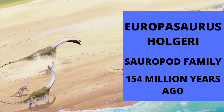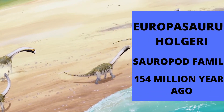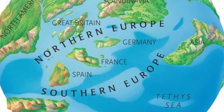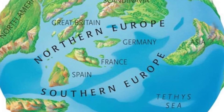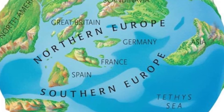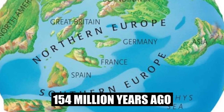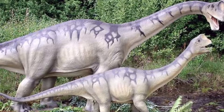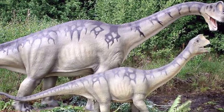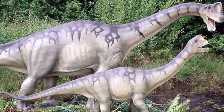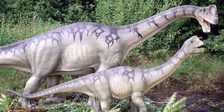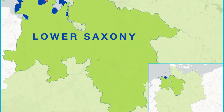Europosaurus was a small dinosaur of the sauropod family that lived in northern Germany during the late Jurassic, in the Middle Camaragian, about 154 million years ago. It is a good example of insular dwarfism that resulted from the isolation of a sauropod population on an island in the Lower Saxon Basin.